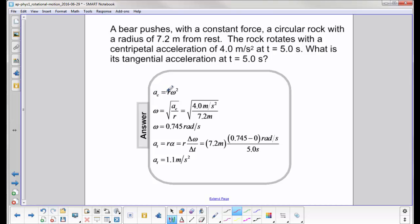We use the definition of centripetal acceleration: v squared over r, or r omega squared. We solve for omega and get the square root of centripetal acceleration over r, which comes out to omega equals 0.745 radians per second.